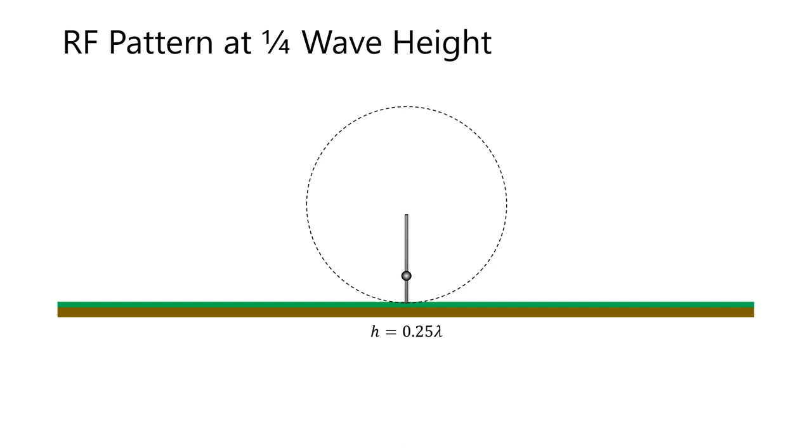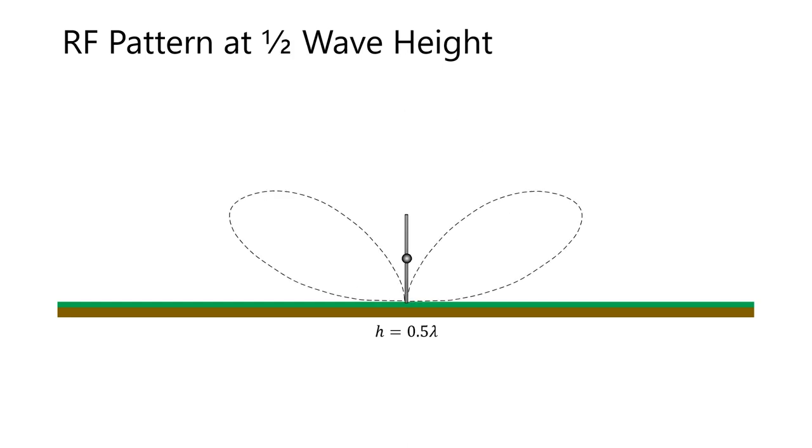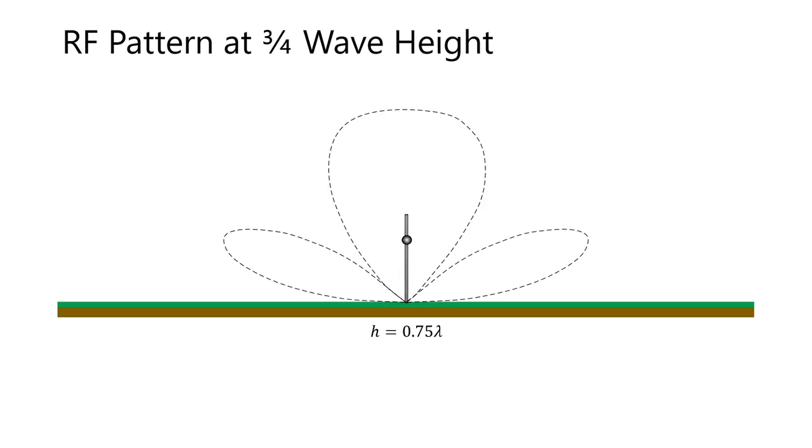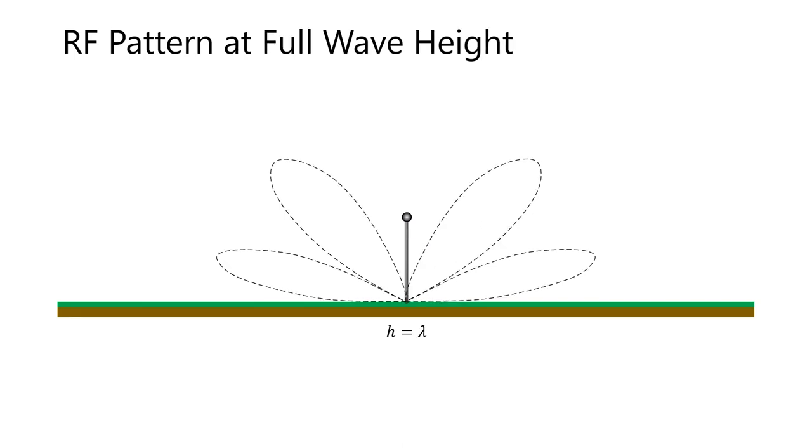Looking again at an ideal point source antenna, mounted a quarter wavelength above ground, we see the resulting radiation pattern. At a half wavelength above ground, we can get this pattern. And at three quarters wavelength above ground, we get this pattern. And finally, at a full wavelength above ground, we get this pattern.